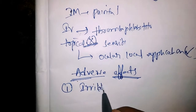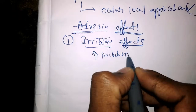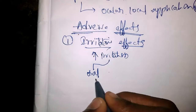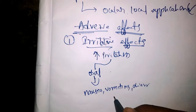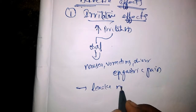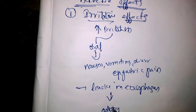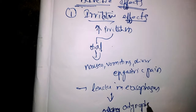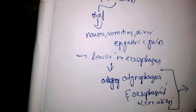Coming to adverse effects, the first category is irritative effects. Orally, they cause nausea, vomiting, diarrhea, and epigastric pain. If the drug leaks in the esophagus, it leads to odynophagia and esophageal ulceration. This esophageal ulceration is more important and more common with doxycycline.